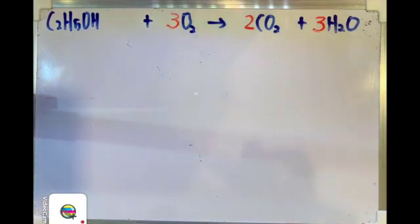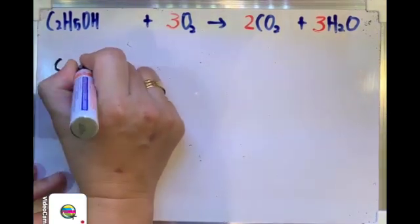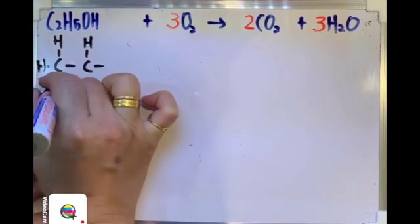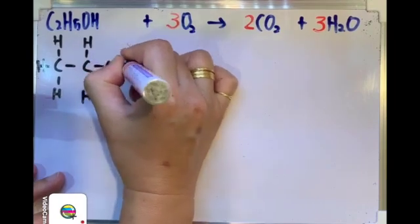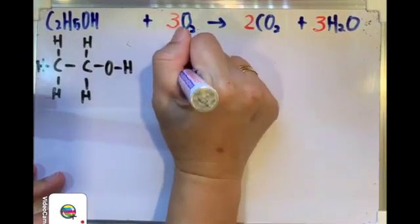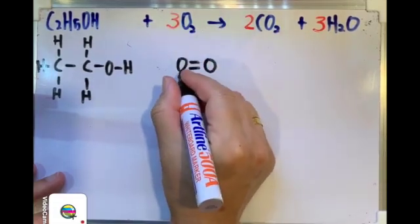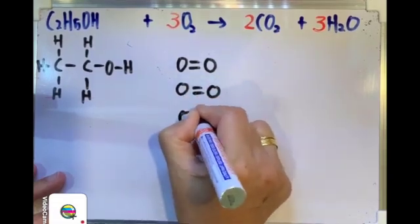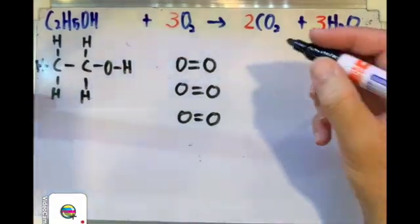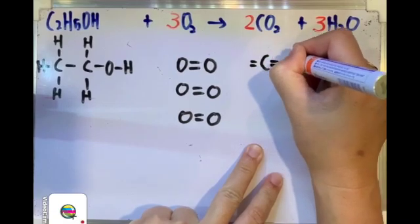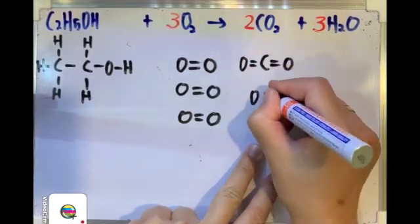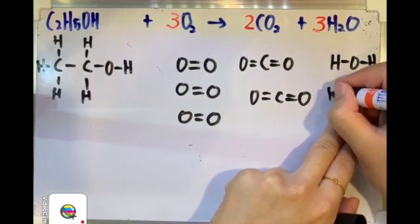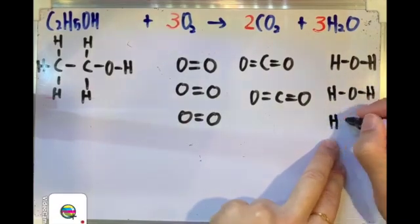Now, the next step: we are going to convert everything into structural formula, starting from ethanol. We have 2 carbon, 5 hydrogen, and another hydroxyl group OH. For oxygen gas, each oxygen molecule forms an oxygen double covalent bond, and we have 3 of these. For carbon dioxide gas, each CO2 forms double covalent bonds, and we have 2 of them. And for the water molecule H2O, we have 3 molecules.